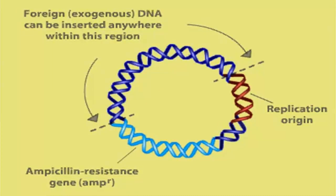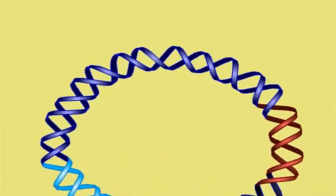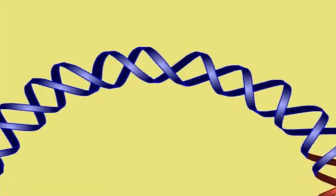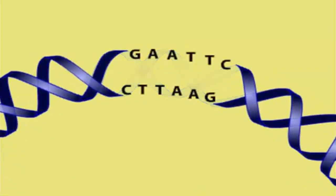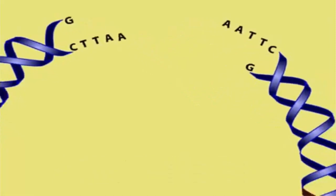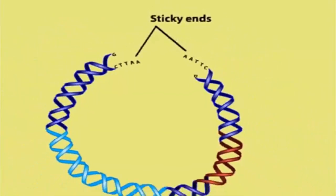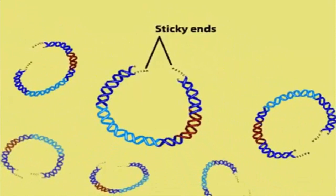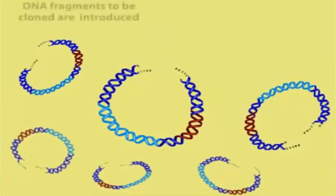To insert foreign DNA, we must first use a restriction enzyme to cleave the vector at the cloning site. Here, ECO-R1 cleaves the palindromic sequence GAA-TTC to produce single-stranded ends called sticky ends. These can hybridize with any piece of DNA that has also been cut with ECO-R1.